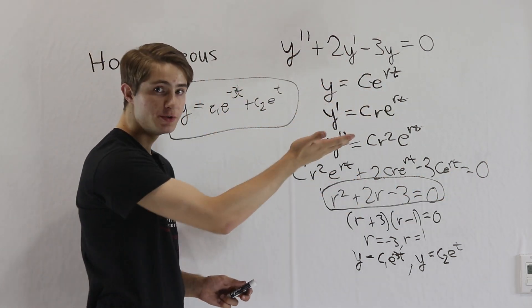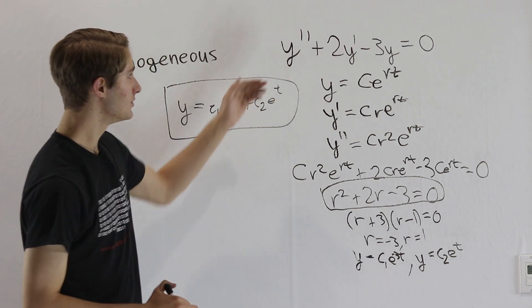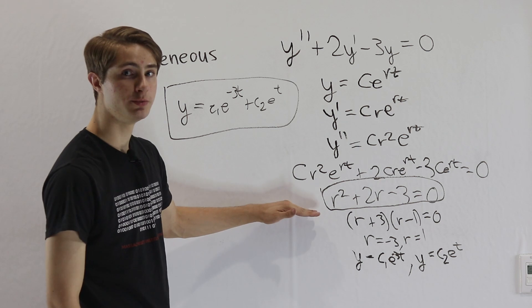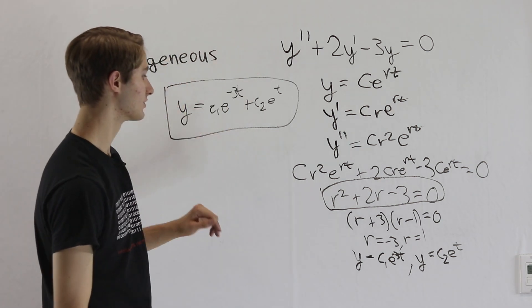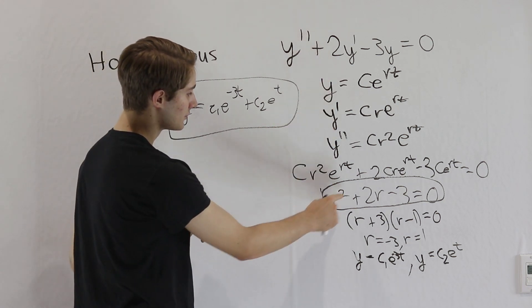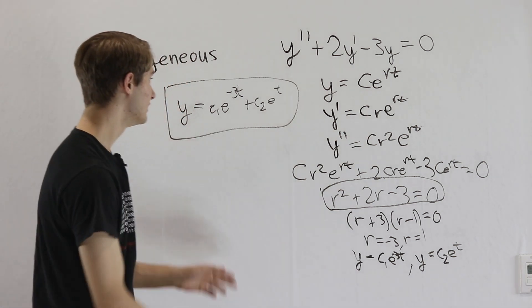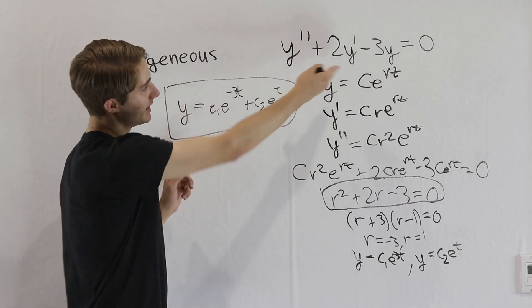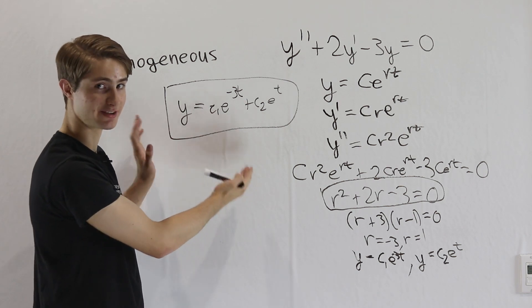So if you want to solve a homogeneous differential equation that looks something like this, what you want to do is turn it into this polynomial right here, which is called the characteristic polynomial of this equation. Then you can solve for the values of r and plug them into y equals c e to the rt, add the two roots that you get in a second order case, and you'll get your general solution just like this.